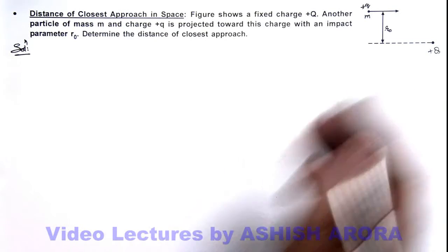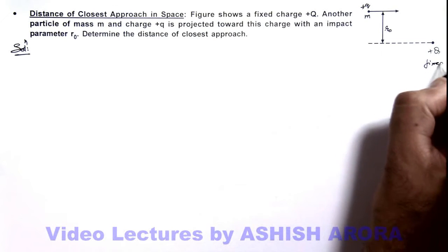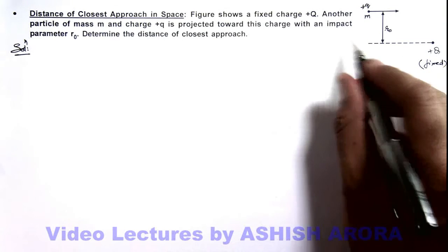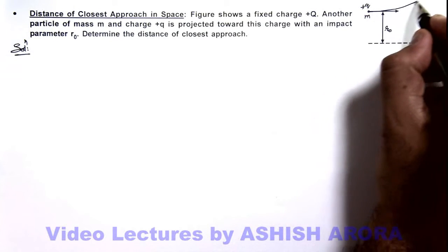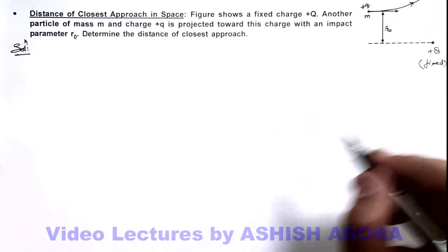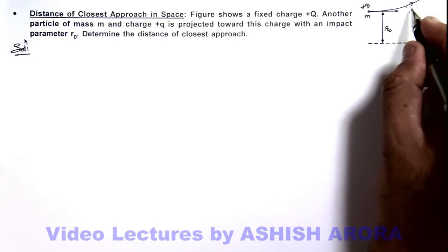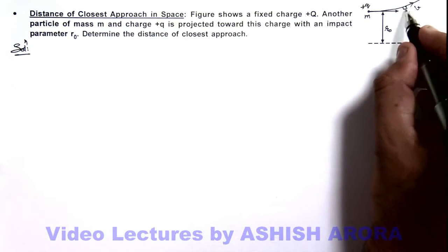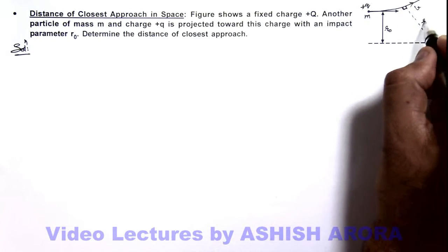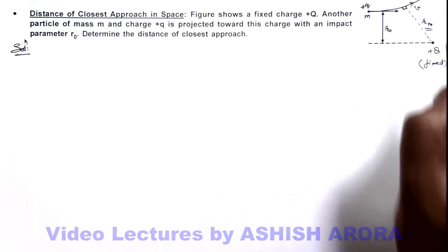Here, we can see in this picture, if this charge is fixed and another charge is projected toward it, it'll be repelled and its trajectory will go on like this. In this situation the closest approach will be at the position when its velocity vector is making an angle 90 degrees with the line joining the two charges, which is say rₘ. Here we are required to find the value of this rₘ.